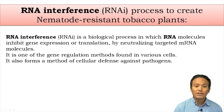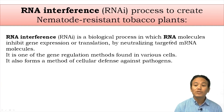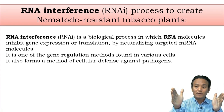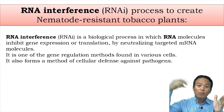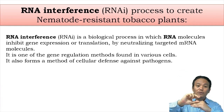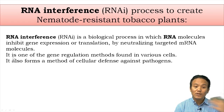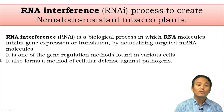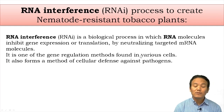RNA interference is defined as a biological process in which RNA molecules inhibit gene expression or translation by neutralizing targeted mRNA molecules. In other words, a particular mRNA molecule is targeted by use of a complementary double-stranded RNA molecule. The double-stranded RNA molecule binds with the mRNA molecule, thereby preventing the mRNA from being translated. The RNA is thus interfering in the translation process — and it is also one of the gene regulation methods found in various cells.